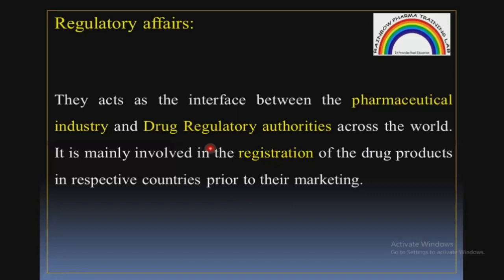Regulatory Affairs people must know all the rules and regulations of particular regulatory authorities — what documents are required and how to do the documentation. They collect data from different departments and cross-functional teams. If the regulator has queries during document review, they contact Regulatory Affairs directly — not QC, not production, not stability. Regulatory Affairs then contacts those departments, collects the required data, and submits it. Simply, Regulatory Affairs is the bridge between the industry and regulatory authorities.